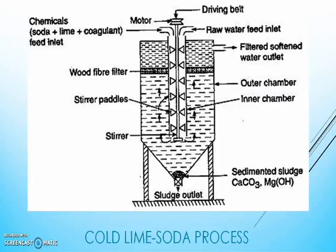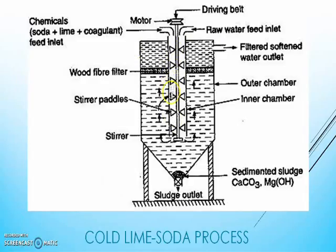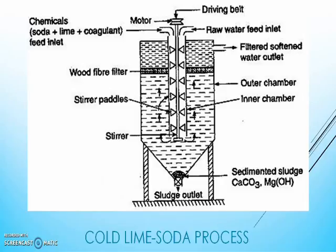Let's first talk about the cold lime soda process. Here you can see the diagram of a continuous cold lime soda softener. This is the outer chamber with the outlet for sludge, wood fiber filter, and outlet for soft water. This is the inner vertical circular chamber, fitted with a vertical shaft carrying a number of paddles which can be rotated using a motor. Inlets for chemicals and raw water are also provided. This process is carried out at room temperature and hence called the cold process.